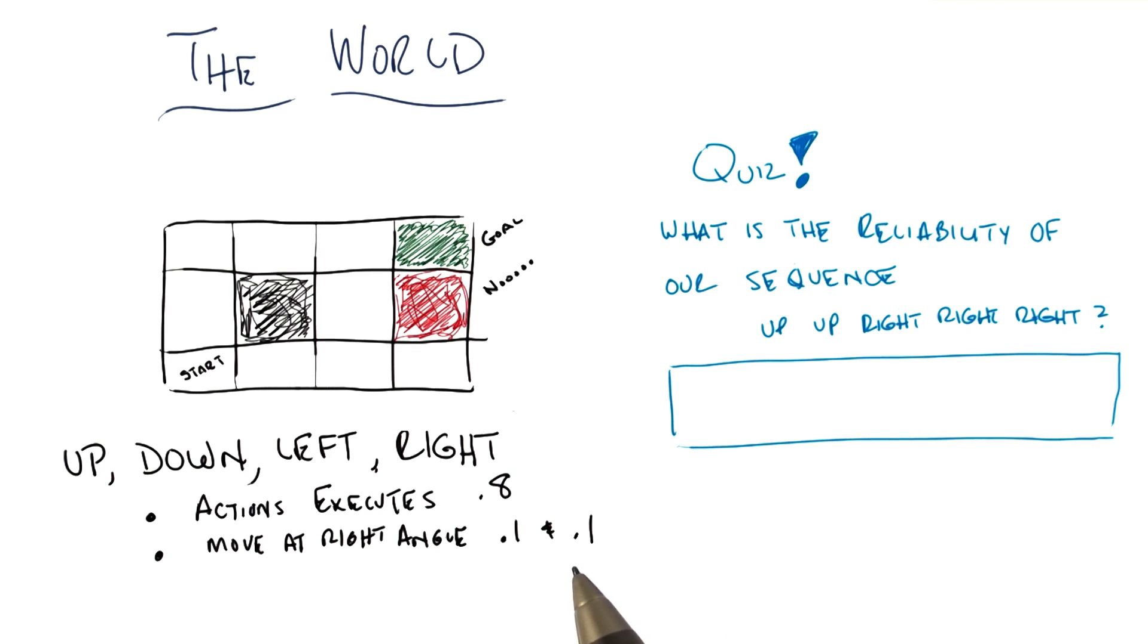And so, we're just going to try that sequence and ask whether or not it actually got us to the goal. Exactly, and when I say reliability, I really mean what's the probability of it actually succeeding. Interesting. Okay. All right, so let's see if we can figure out the answer. You ready? I'm ready. All right, go.